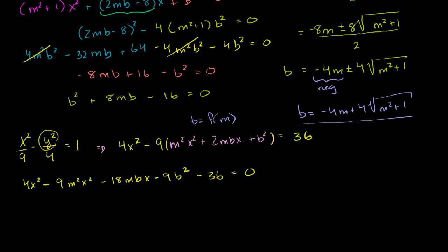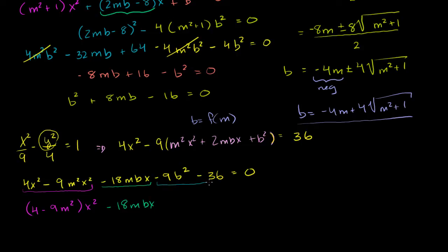Let me combine the various degree terms. These are the x squared terms: (4 minus 9m squared) times x squared. Then our only x term is minus 18mbx. And then our constant terms are minus 9b squared minus 36, and that is going to be equal to 0.